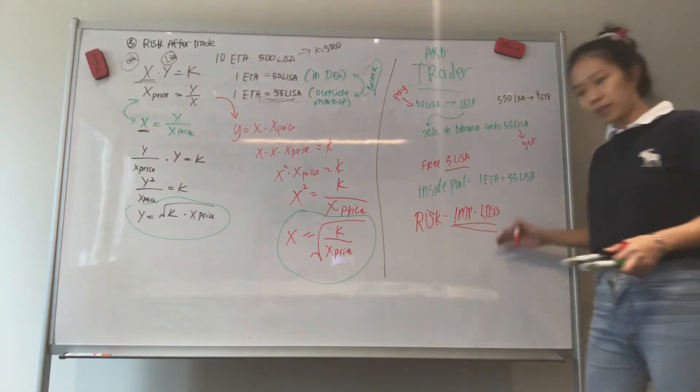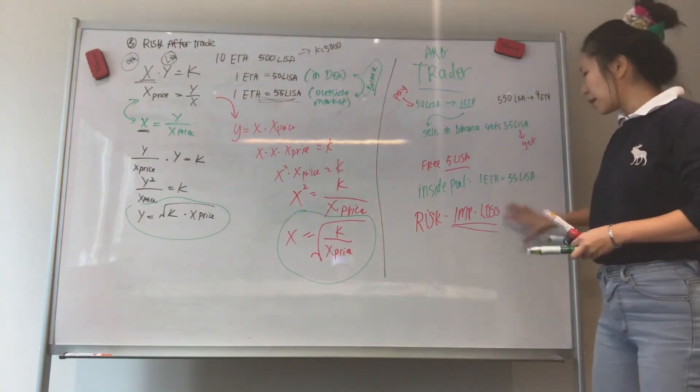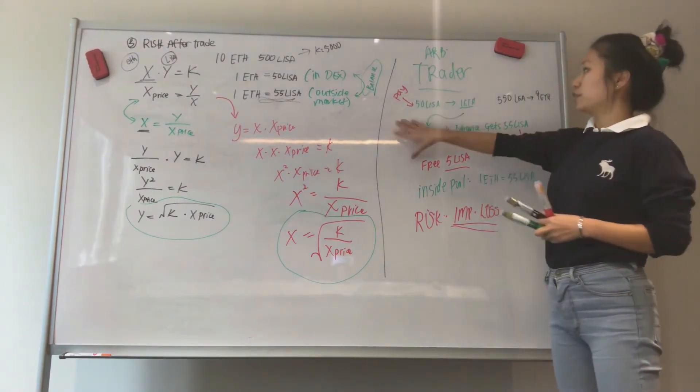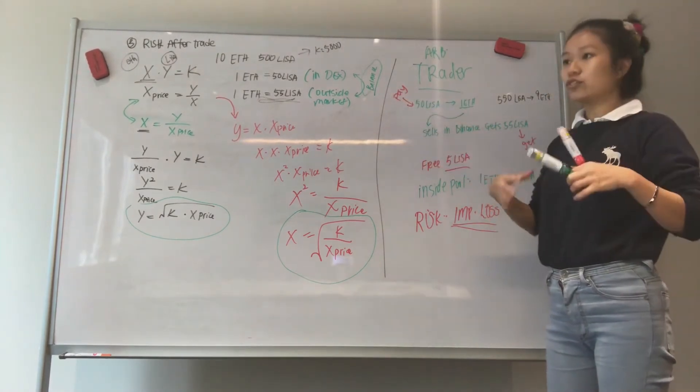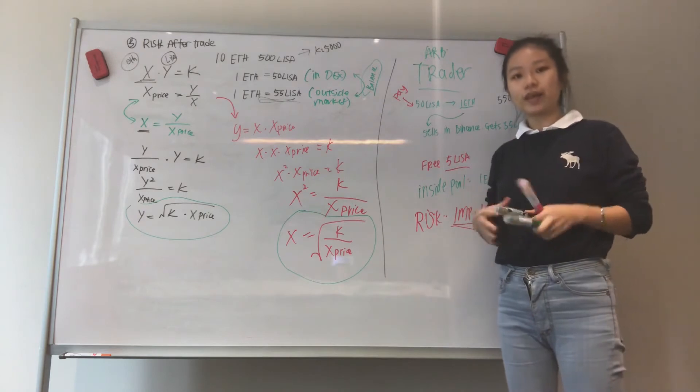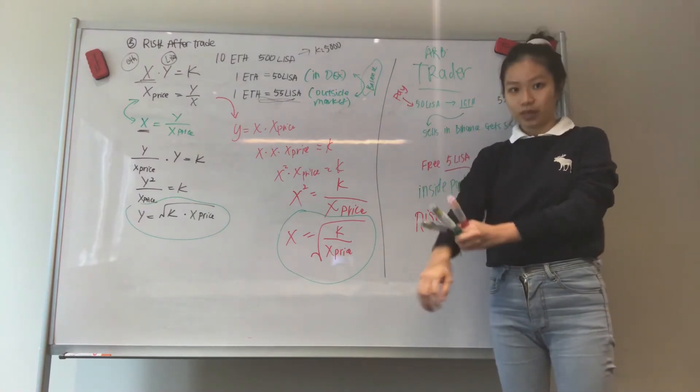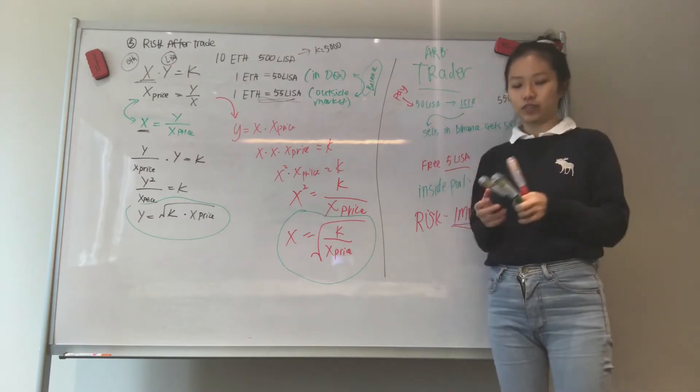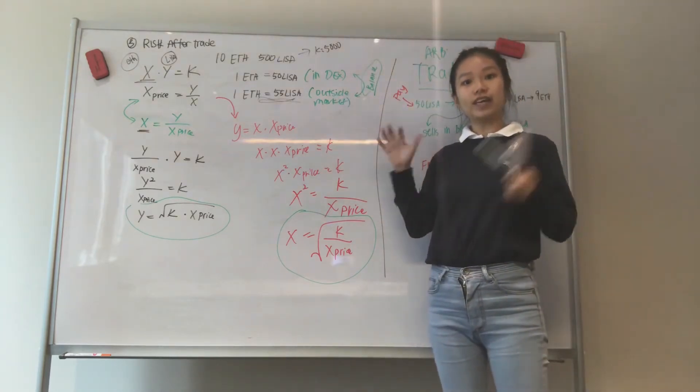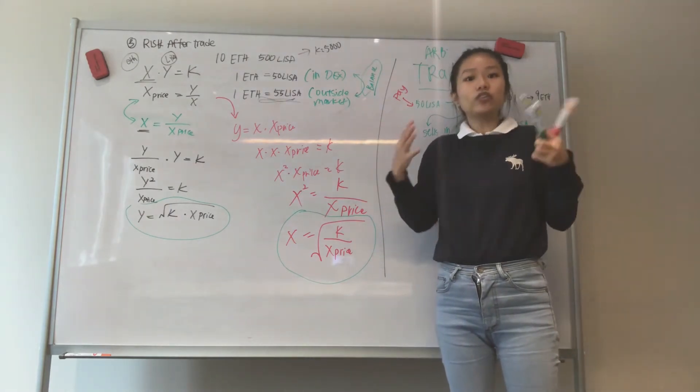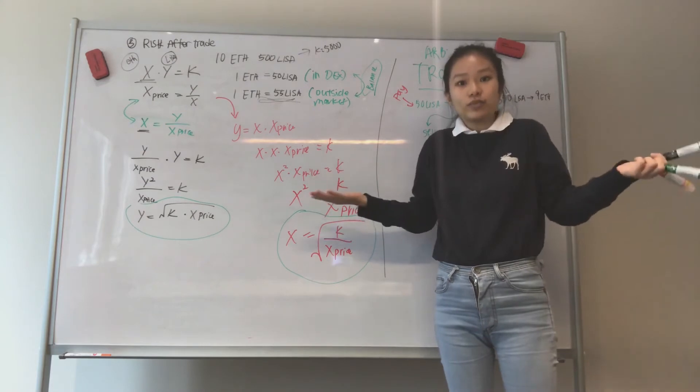So this impermanent loss exists because of these different trades. I don't want to dive so deep because we really covered a lot of math. Let me give you the concept first. I don't want it to be too complicated. Because right now what we have here is good enough to get you to understand what are the risks involved and how is the risk calculated.